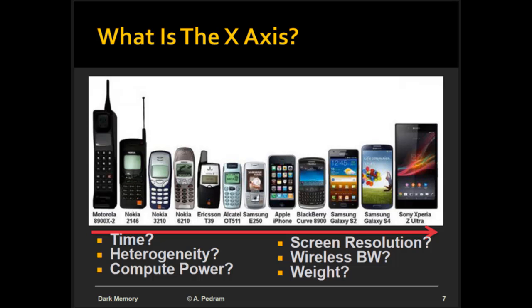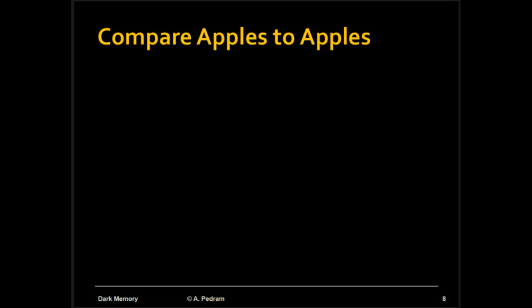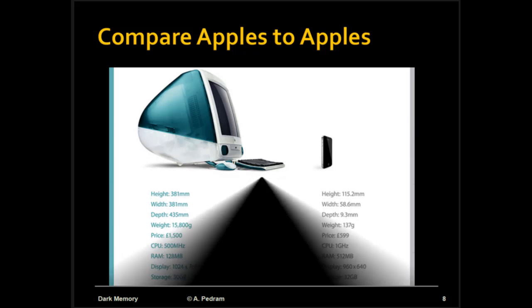So I have a question for you. What is the x-axis in this picture? Is it time? Is it the heterogeneity of the chips? Is it the compute power? Is it the screen resolution or a bunch of them, like wireless bandwidth? Of course, you can see that the screen resolution has increased, the functionality has increased, and the cell phones that you have are becoming more and more powerful. Well, you might say these are different cell phones from different companies and this is not fair comparison. So I want to compare apples to apples for you.